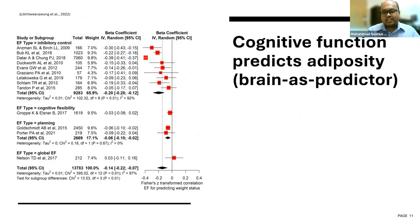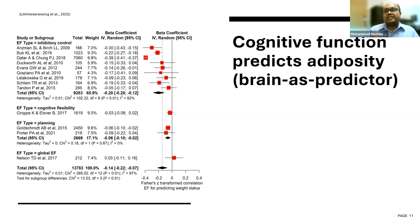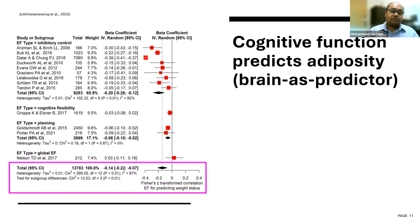This last slide on the brain-as-predictor perspective shows findings from a meta-analysis that examined whether baseline executive function in children and adolescents can predict follow-up weight status. This meta-analysis showed that if children have higher executive function at baseline, they tend to present with lower adiposity at follow-up.